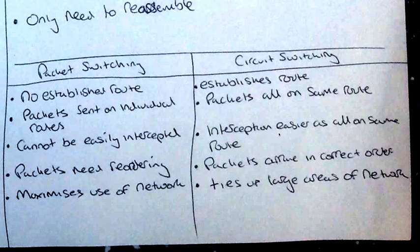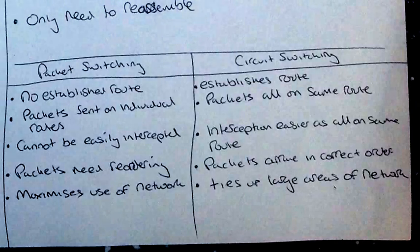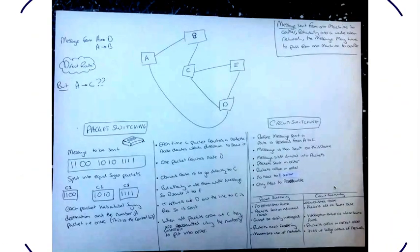Packets need reordering at the end of packet switching, whereas in circuit switching, the packets arrive in the correct order. Packet switching maximises the use of the network, basically meaning the whole network is utilised and it uses it efficiently. Whereas circuit switching ties up large areas of the network. So when circuit switching is going, nothing else can be sent on that route. And that is essentially what you've got.